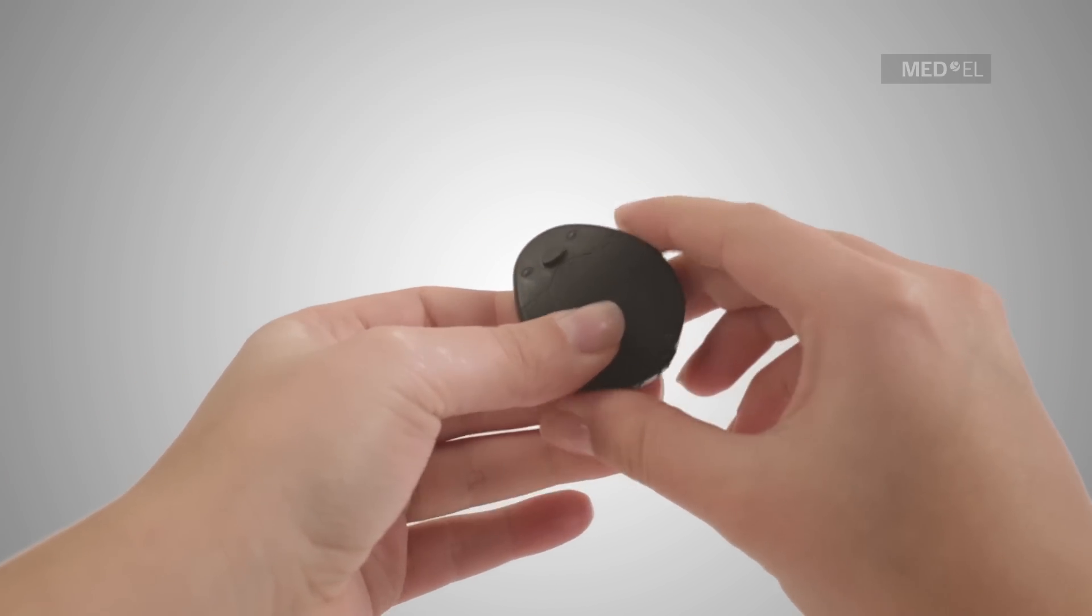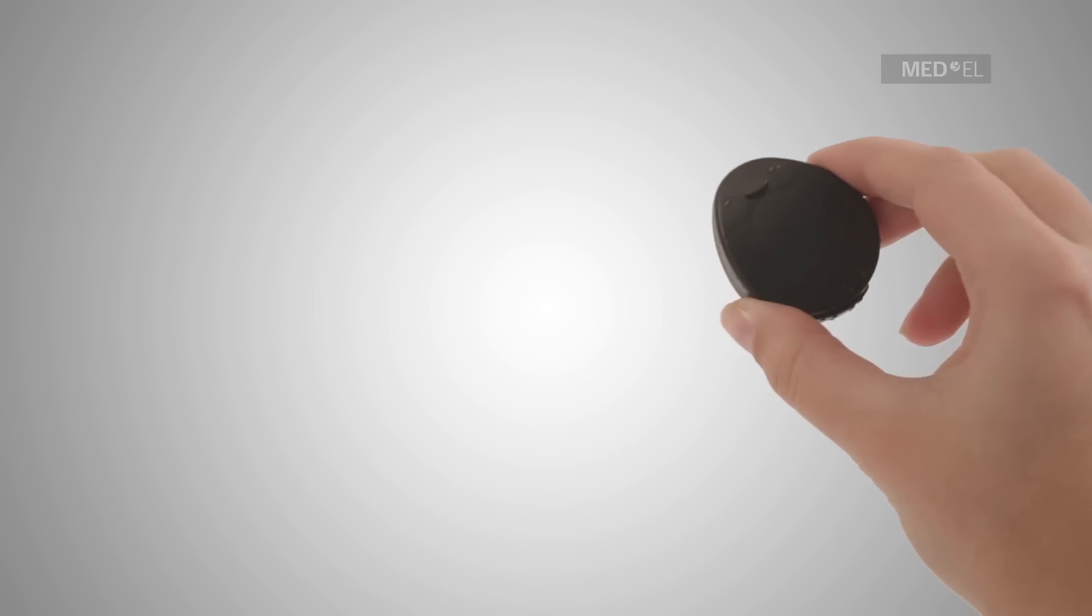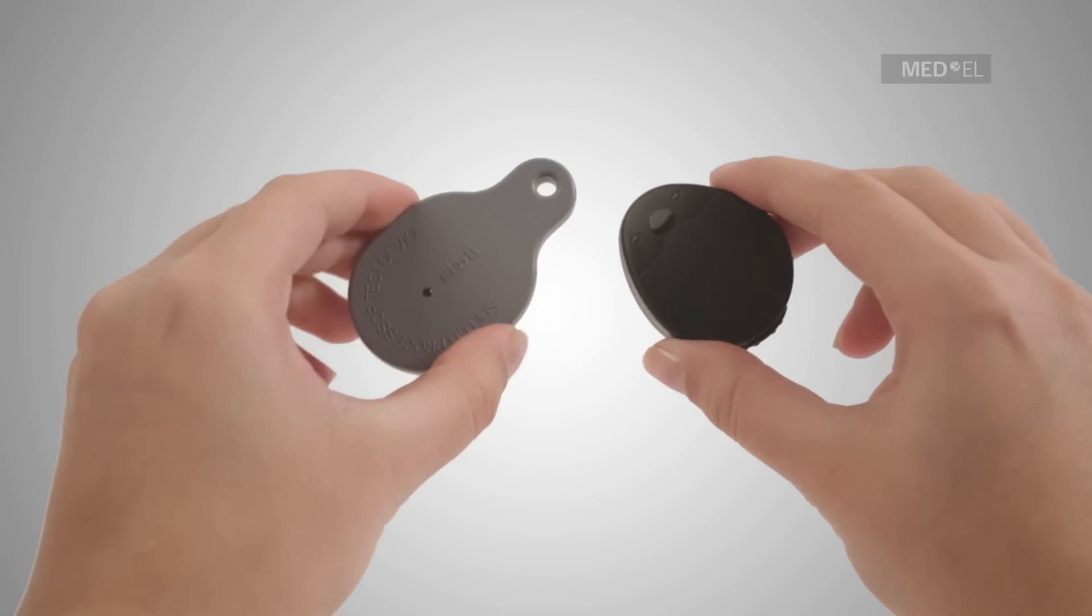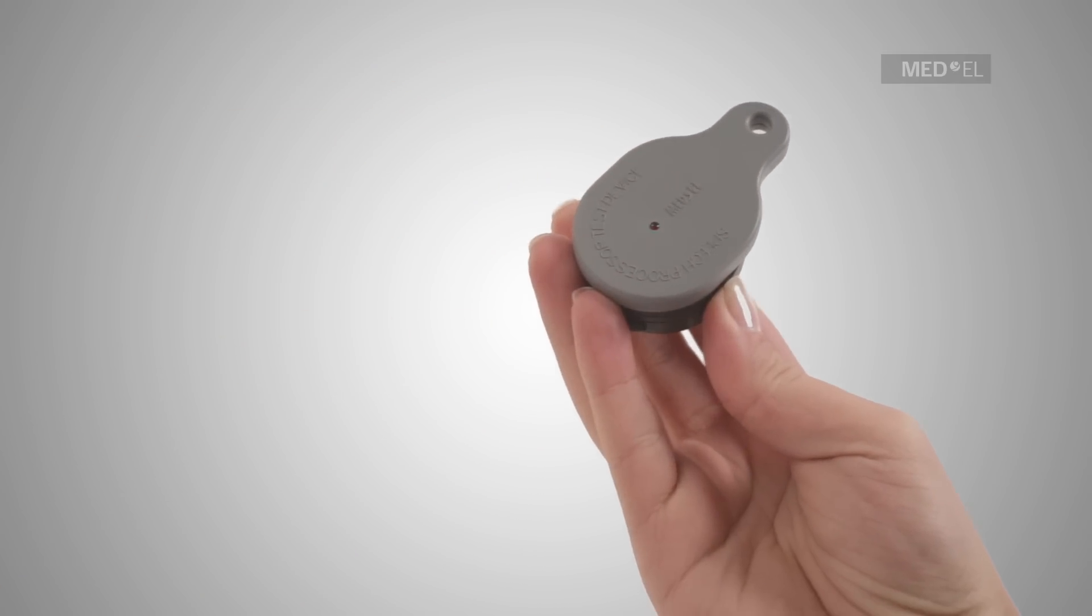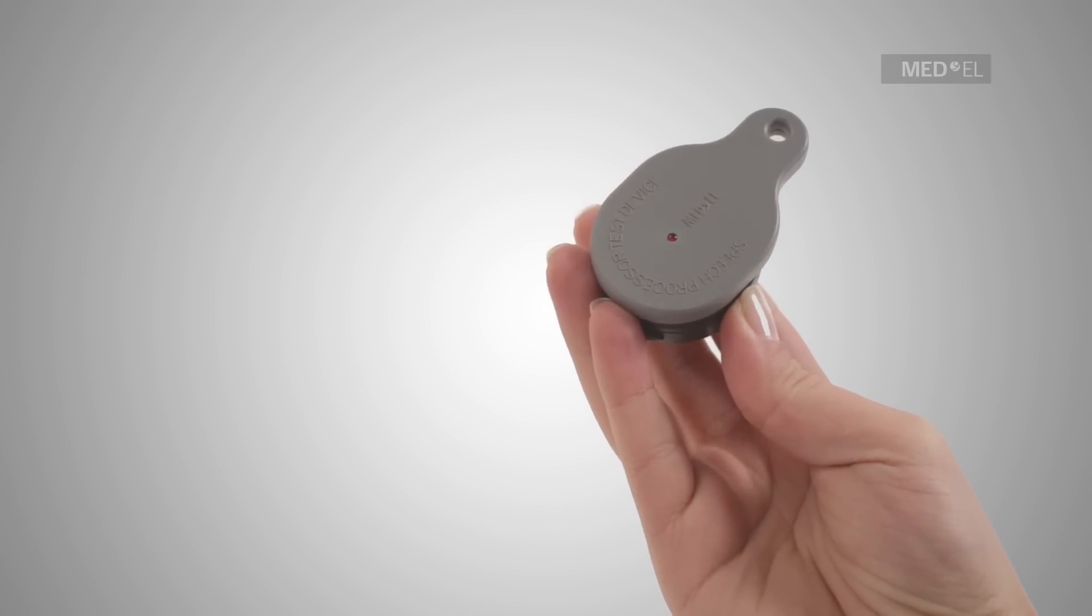After first switching it on, place the Rondo underneath the Speech Processor Test Device. The Rondo should be upside down and the red indicator light of the Speech Processor Test Device should be face up.